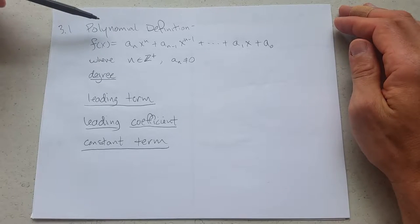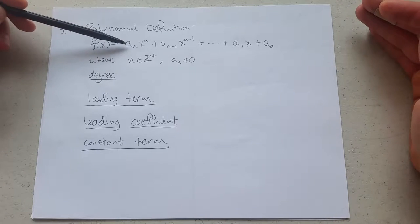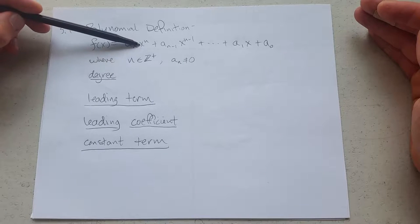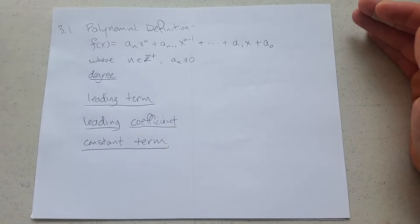What's the definition of a polynomial? Well, it's a bunch of terms added together. The terms have to be special. They have to be powers of x with a number, a real number in front.